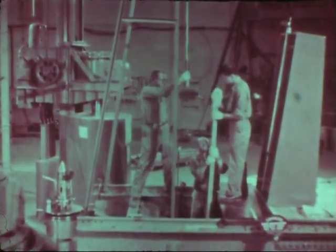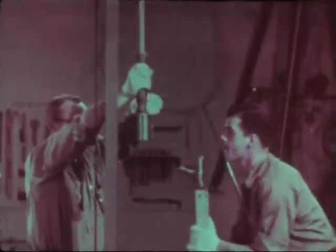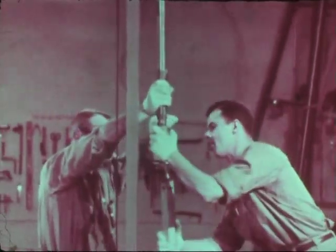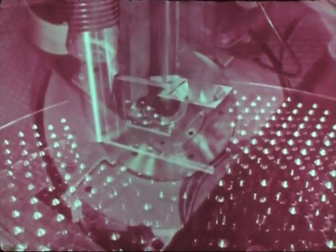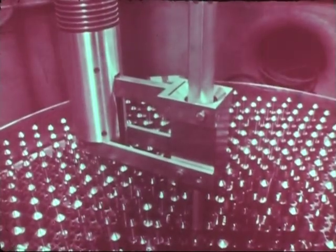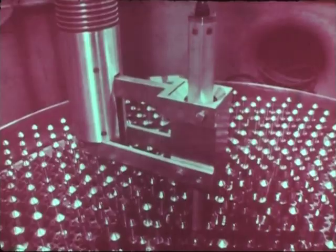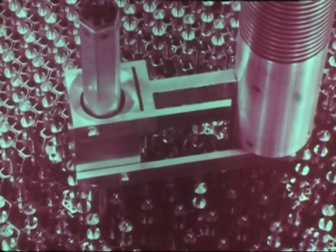Such a reactor is Argonne's experimental breeder reactor 2. The fuel is in the form of uranium rods within a stainless steel case. Each such fuel assembly contains the energy of 180 tank cars of gasoline.